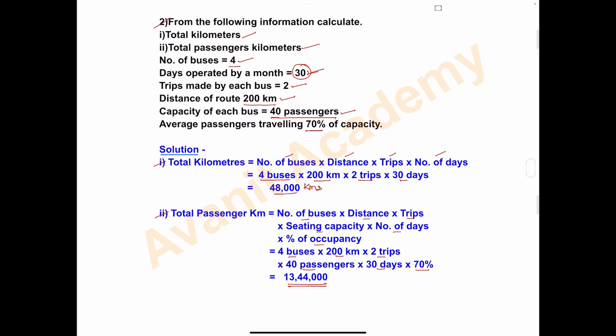Total passenger kilometers is 13,44,000 and total kilometers is 48,000. Such types of problems will be asked for 5 marks. Got this solution? If you have any doubt, please let me know in the comment section. Thanks for watching my video.